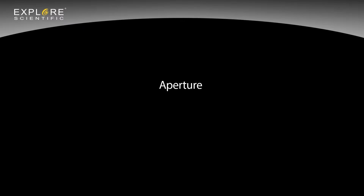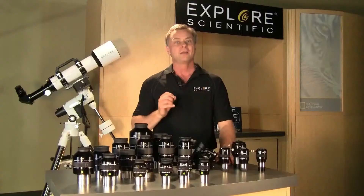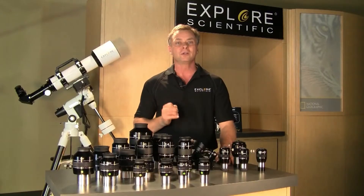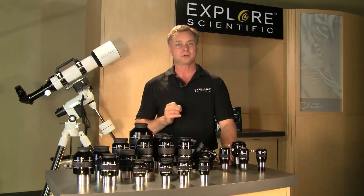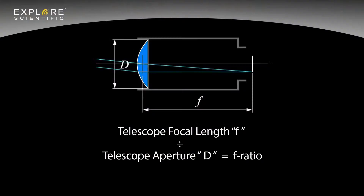This is how a telescope works: aperture, focal length, f-ratio. The telescope focal length divided by the telescope aperture equals f-ratio. From here we can determine magnification and true fields of view.